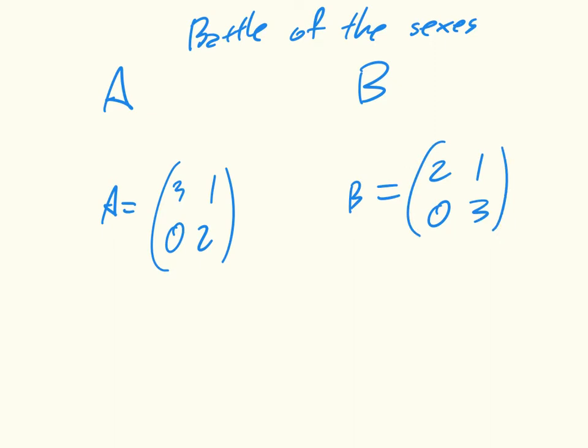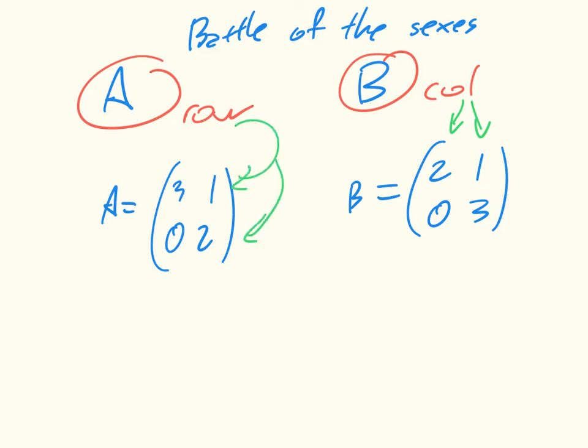Now, what we are going to use as a convention is that the first player controls the row, and the second player controls the column. In other words, are we in this column or that column? And the row player controls, are we in this row or this row?